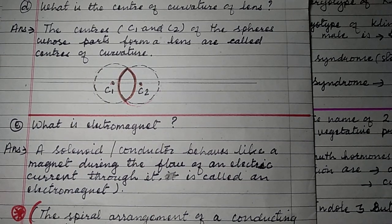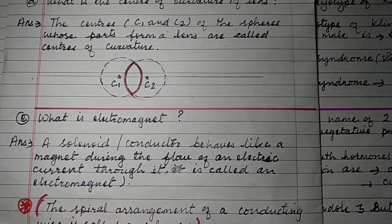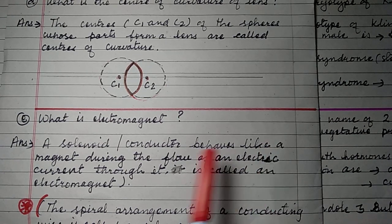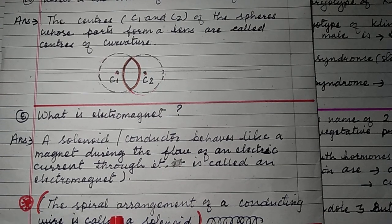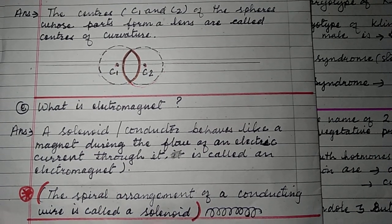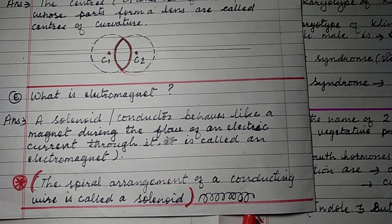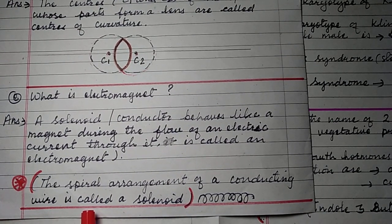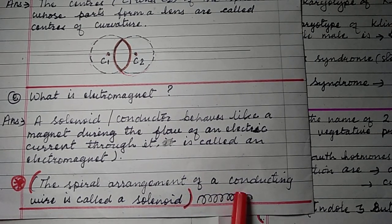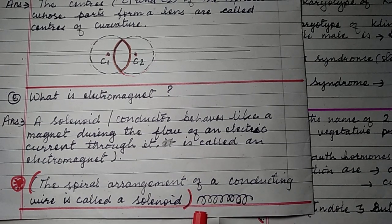Question number 1E: What is an electromagnet? A solenoid or conducting wire behaves like a magnet during the flow of electric current through it. When current flows through a conductor it behaves like a magnet — this is called an electromagnet. It is a temporary magnet. A solenoid is a spiral arrangement of a conducting wire.